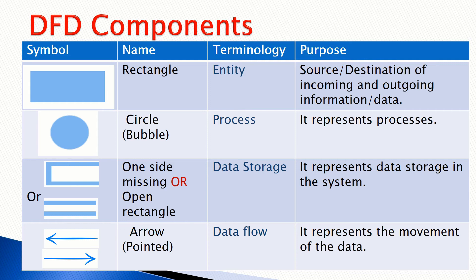The third one is the open rectangle — that is, a rectangle with one side missing. This is used to determine data storage during the processing and flow of data. The data is stored somewhere, and this storage is represented by the open-sided or one-side-missing rectangle. The last component is the pointed arrow, which represents the movement of data from one module to another. These modules are basically the entities that are most of the data storage of the information system.